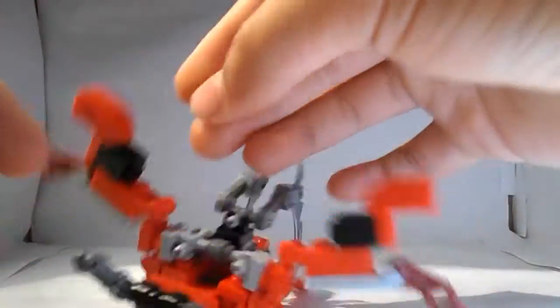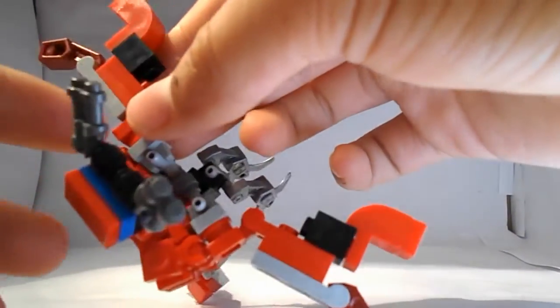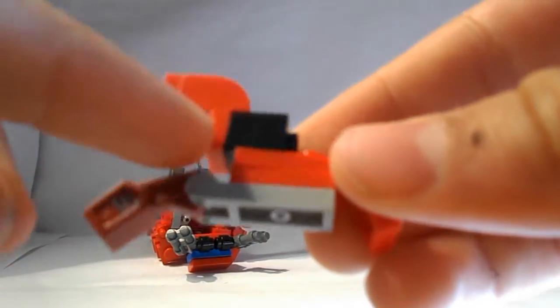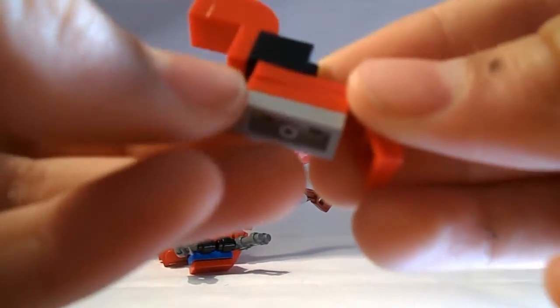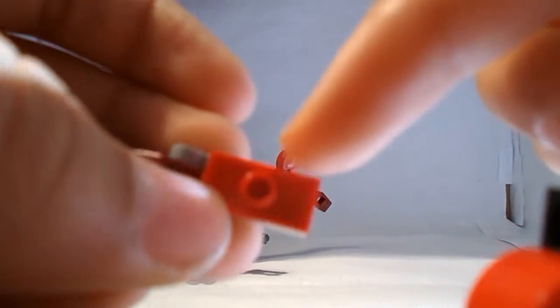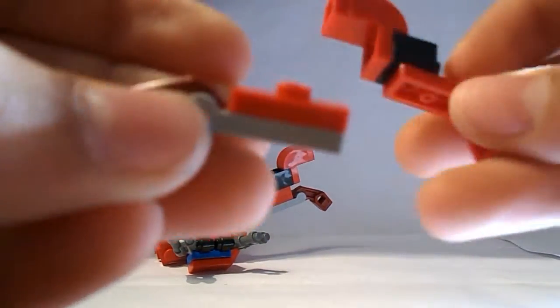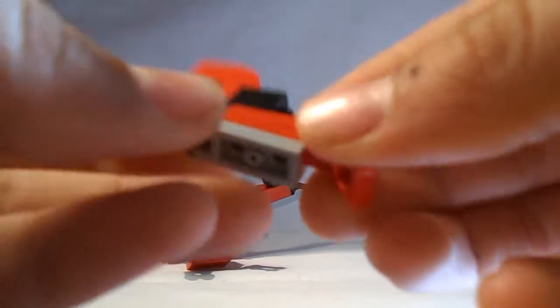And now this part of the claw—I'm just going to show you this—this part of the claw is on this little jumper plate. And it's going to rotate down like so.